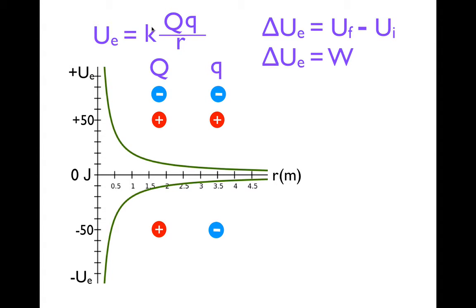When are we going to have a negative answer? K is positive, R is positive, so if we have a positive charge and a negative charge, negative times positive gives a negative answer. So if you have a negative charge and a positive charge, their potential energy is going to be negative, and as you bring those charges closer together, their potential energy gets more negative. So if you have positive potential energy, you know you have like charges that repel. If you have negative potential energy, you know you have opposite charges that attract.